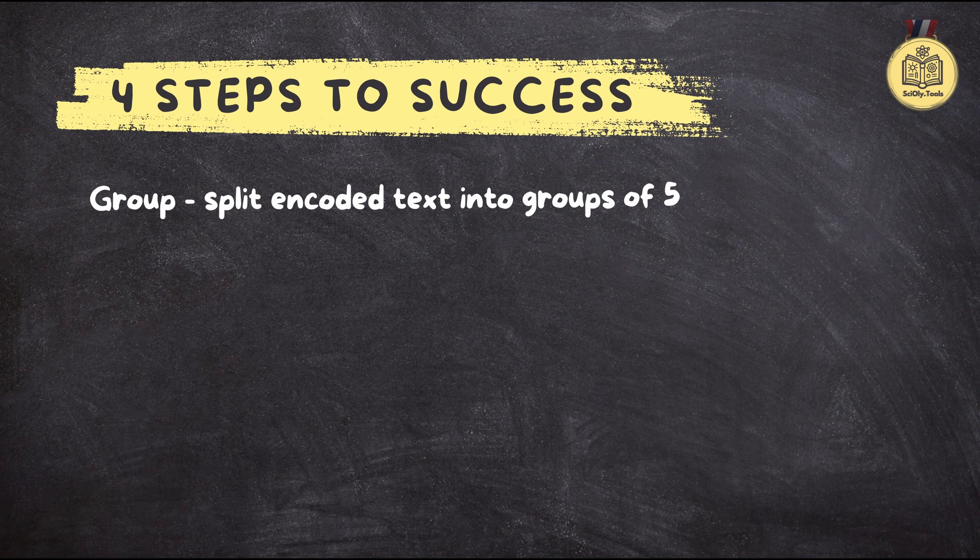Let's start with step one: group. You want to put all the A's and B's together in groups of five. That's our foundation for cracking the code. We're dividing the message into chunks of five.